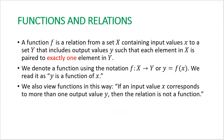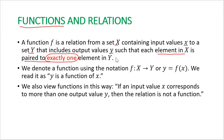Now let us define what a function is. A function f is a relation from a set x containing input values to a set y including output values, such that each element in x is paired to exactly one element in set y. For a relation to be a function, we want to avoid having an element x paired to more than one element in set y. This means the one-to-many relation is not a function — only one-to-one and many-to-one relations are considered functions.